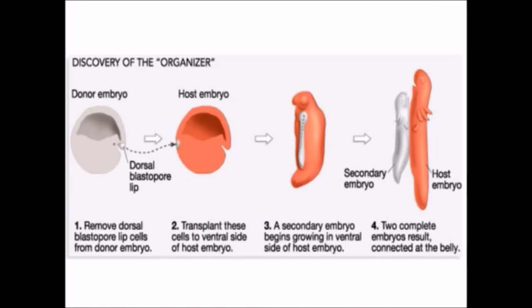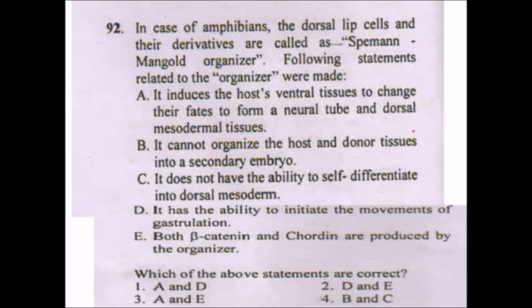Here we have two embryos — one from the donor embryo and one from the host embryo. When we transplant the dorsal blastopore lip to the ventral side of the host embryo, we will see a secondary embryo growing on the ventral side of the host embryo. They are connected at the bellies. Now come to the options.